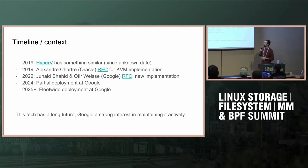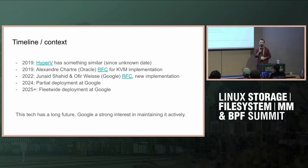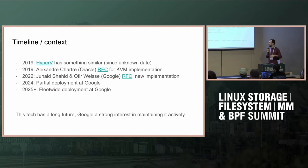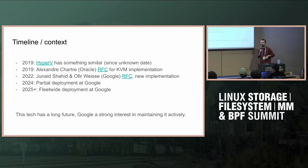This idea isn't new. As far as I know, the first implementation was in Hyper-V in 2019. I think Xen has it too. Alexander from Oracle used the Hyper-V implementation as inspiration for a Linux RFC about five years ago. A few years later, Junaid and Offer from Google posted a new RFC that's a bit more flexible and generic. In the intervening time we started working on going from that high-quality prototype to running this in production.